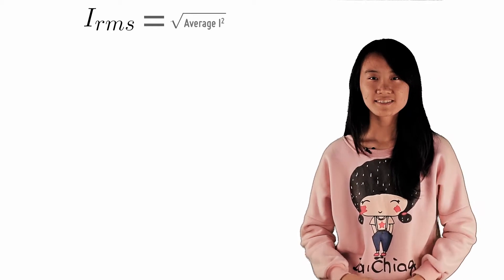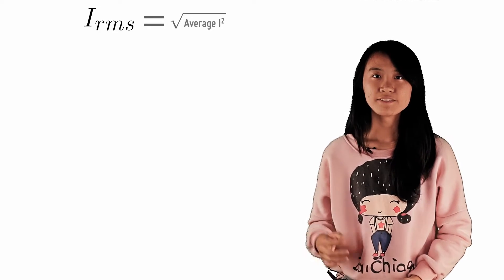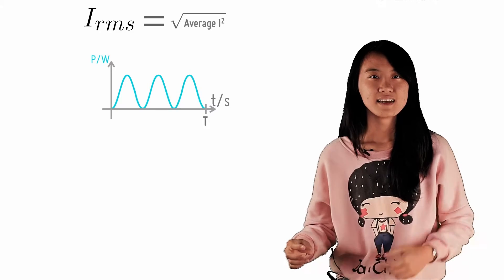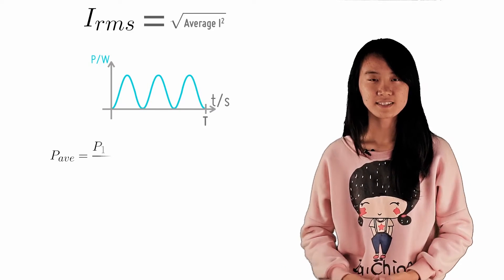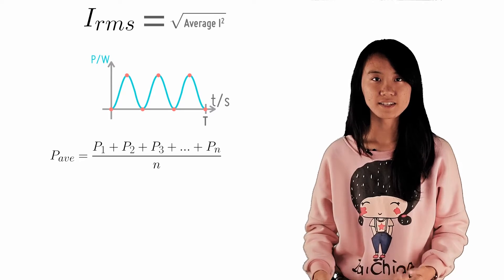Let me explain why these two definitions of the average power are equivalent. If we have an AC current, we can consider many different instantaneous powers: P1, P2, P3, and so on, on the graph as seen here.